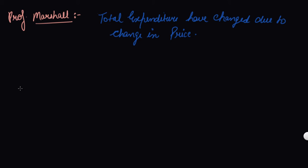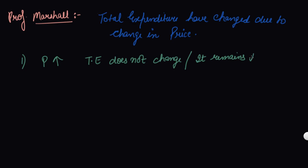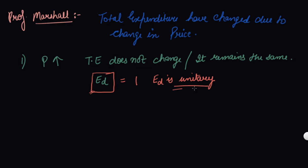There are three ways to calculate this. Number one: if your price increases and your total expenditure does not change — it remains the same — then your elasticity of demand, denoted as Ed, is unitary. Unitary means it is equal to 1.